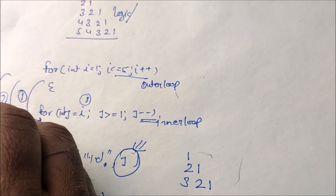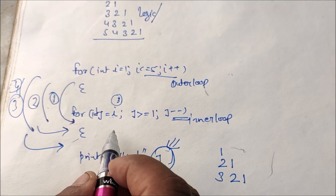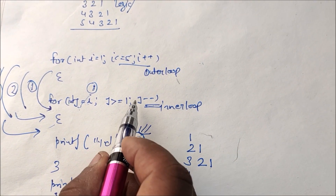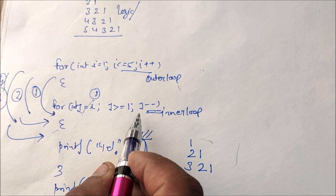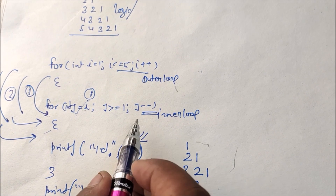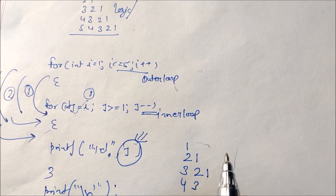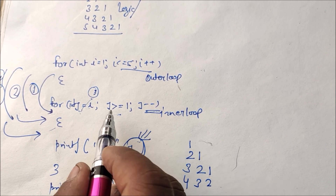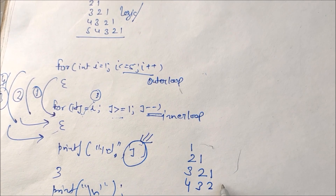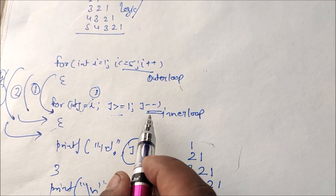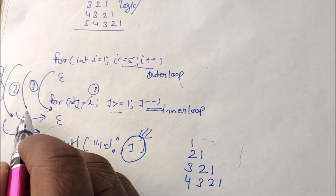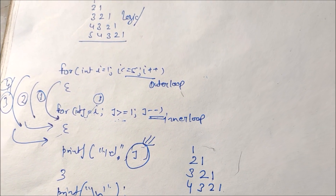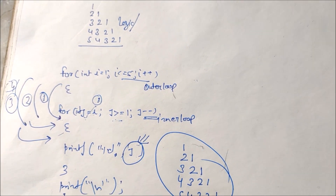Now i = 4. We enter the inner loop, j = 4. Condition true, print 4. Then j-- gives j = 3, print 3. j-- gives j = 2, print 2. j-- gives j = 1, condition true, print 1. j-- gives j = 0, condition false, exit inner loop. Then i = 5 follows the same pattern. This completes the dry run of this program.